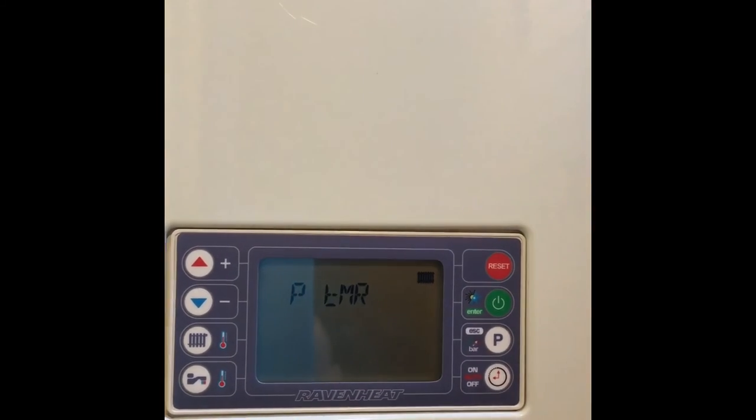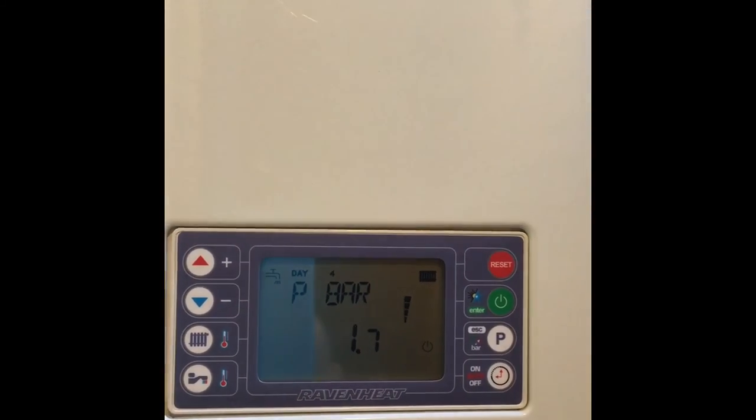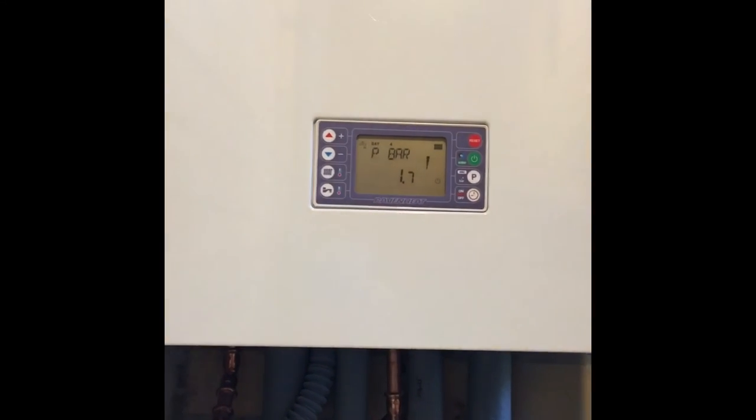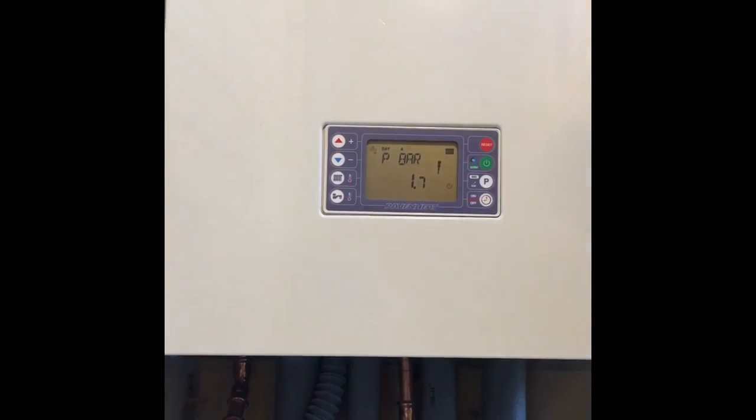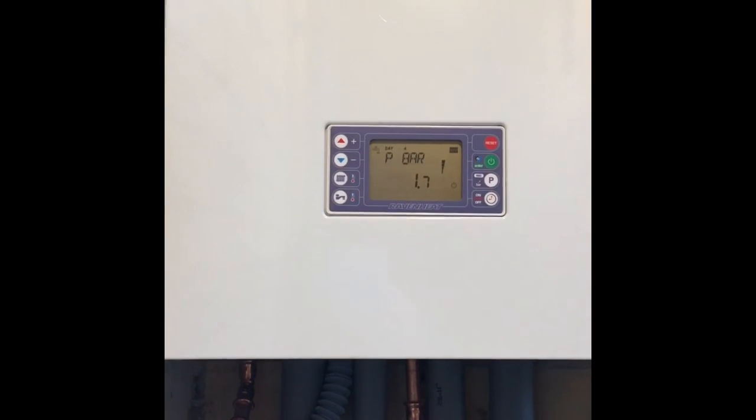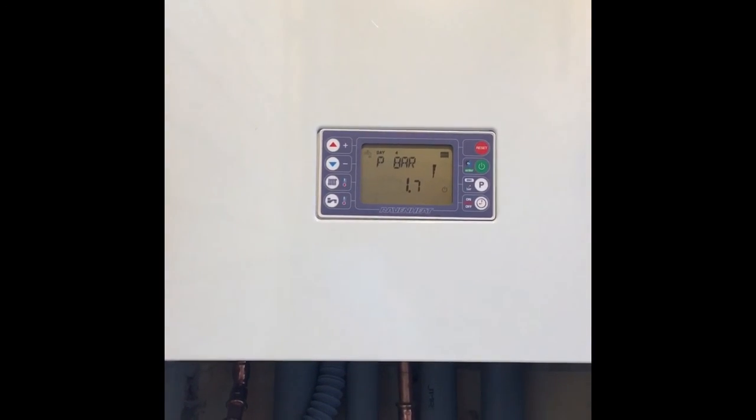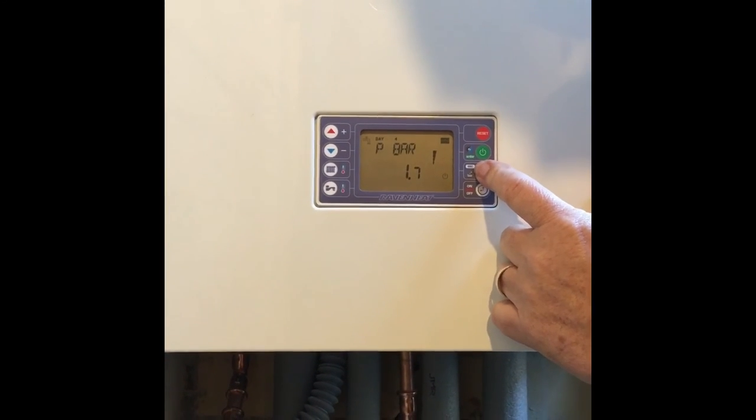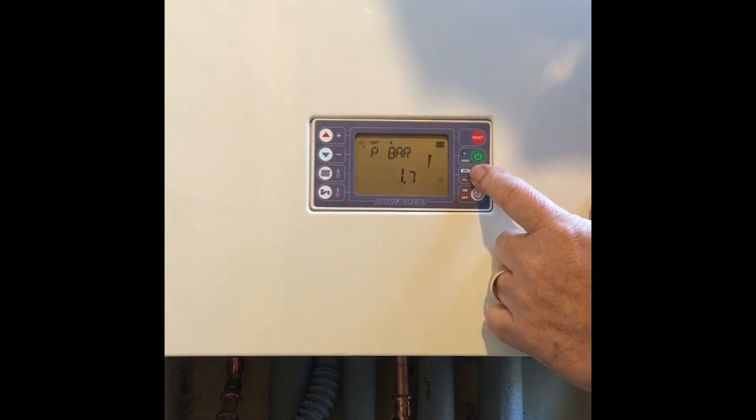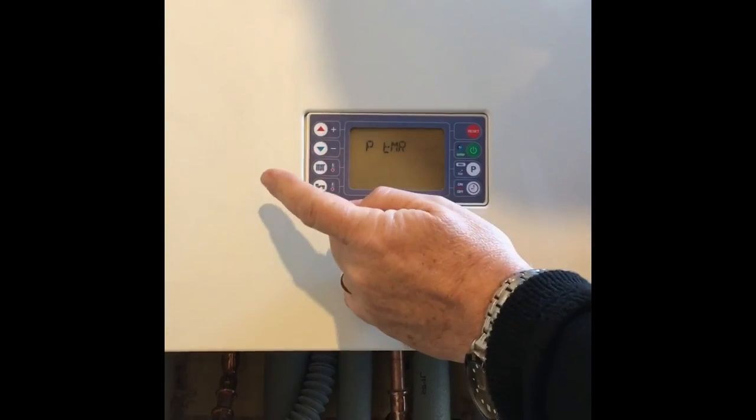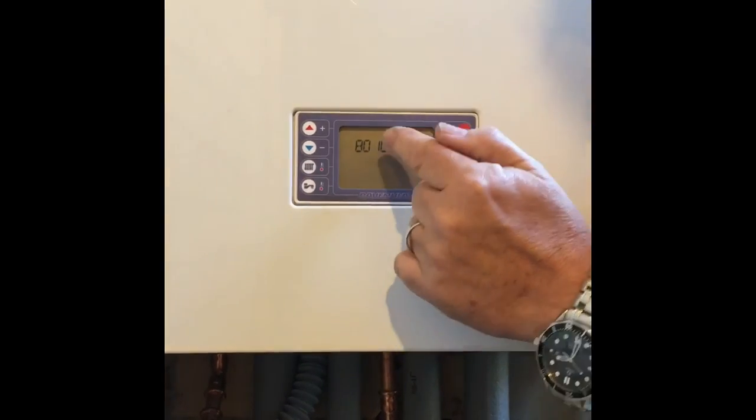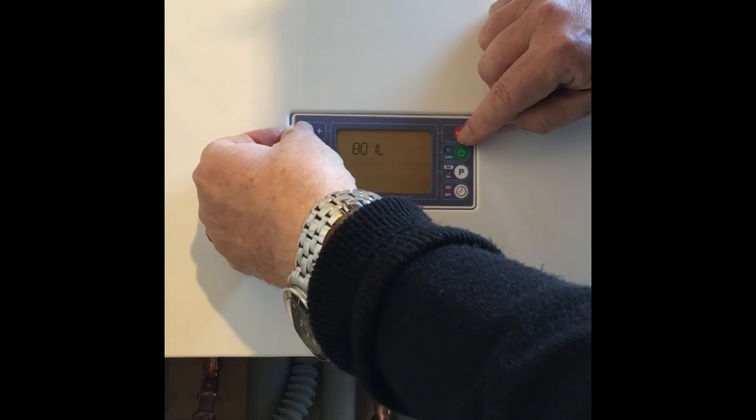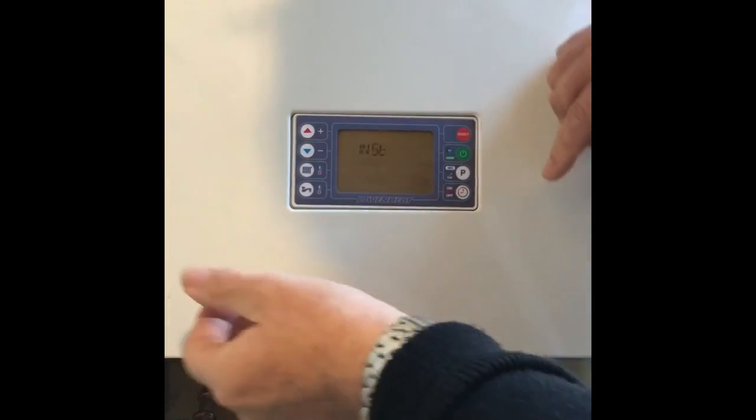Press the escape. Right. Now this is, if you like, the installer menu. Now this is very important. This boiler has two menus. One the customer menu and one the installer menu. If I go into the P, done the time, we've done the program timer. The next is boil. Now boil is the installer or the service engineer menu.